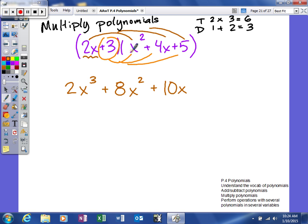When I multiply these two together, it will give me a positive three X squared. And then this times this will give me a positive twelve X. And this times this is a positive fifteen.